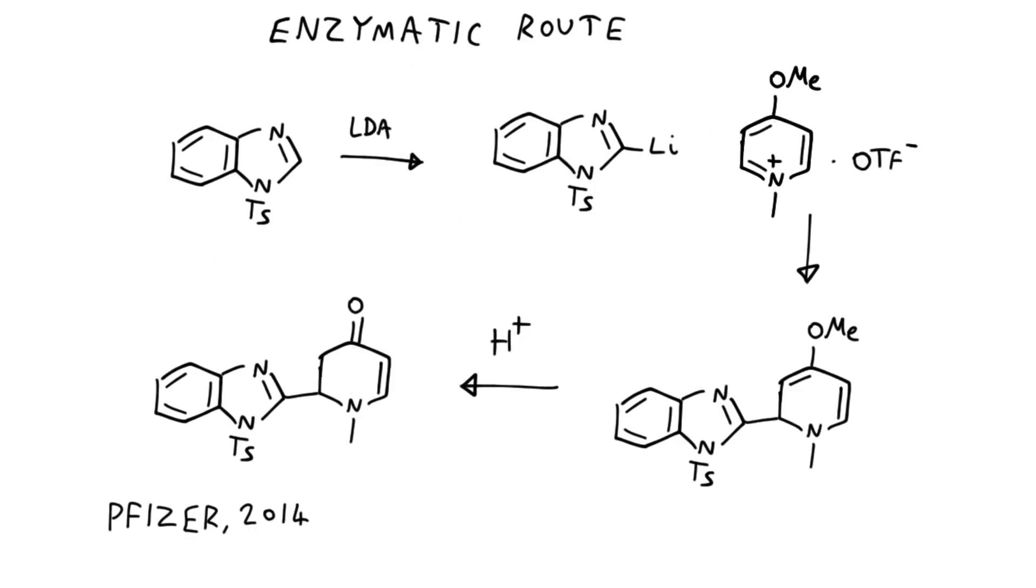But then in 2014 they came out with a slightly improved route, and this used an enzyme as the source of the chirality of the product. So this route looks quite a bit different. Starting with the tosyl-protected benzimidazole, they lithiated it with LDA at minus 15 degrees to afford this aryl lithium.